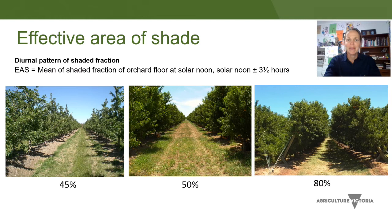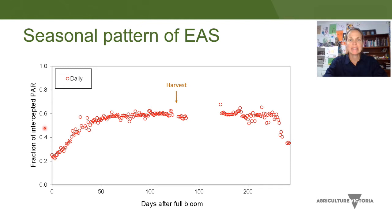These photos give an indication of what your effective area of shade might be — you can compare them to what your orchard looks like. For a Tatura trellis with a fairly dense canopy, 80% is possible, but 70% is generally considered quite high. This figure shows the seasonal pattern of effective area of shade for a mature pear orchard. It starts at around 20% at full bloom and in this example increased to a peak of 60%, where it remained steady for the remainder of the season. This means you can take a single estimate of EAS once leaf-up is completed and you needn't worry about that value changing for the rest of the season.